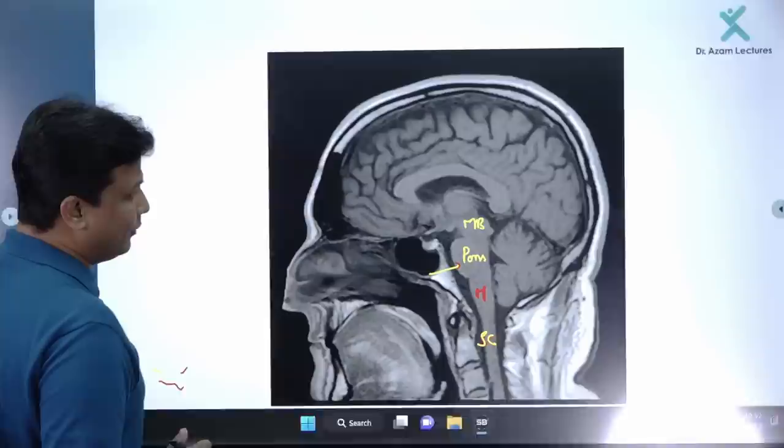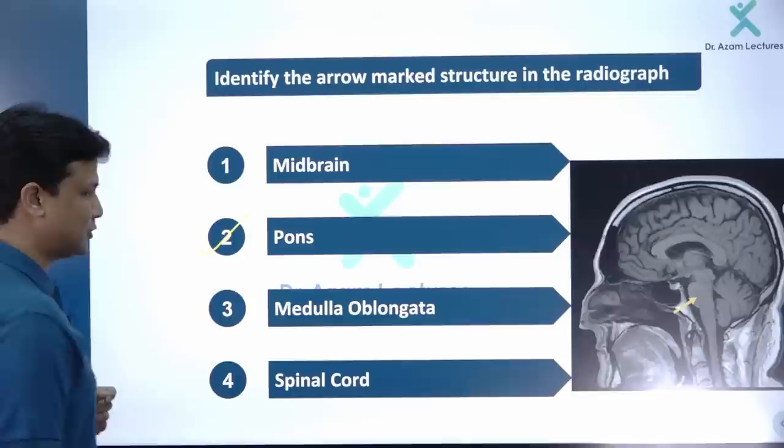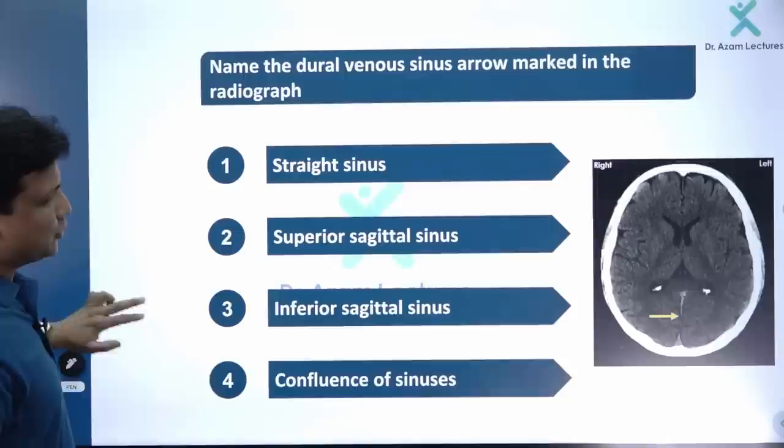Coming back to the question: the arrow-marked structure in the sagittal radiograph is the pons. That's the answer — perfectly done and very simple.